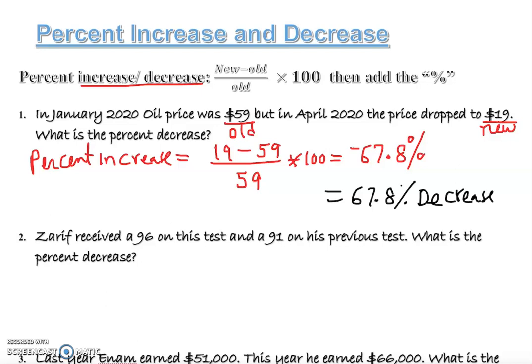Let's take a look at the next one. Zarif received a 96 on this test, so that's 96, this test, so that's going to be new. And 91 on his previous test, that's going to be old. So I'm writing old here, new here. What percentage is Zarif increase or decrease? I actually put down this intentionally here. Let's see what is happening here. So percent decrease equals new is 96 minus old is 91 over old, which is 91, times 100.